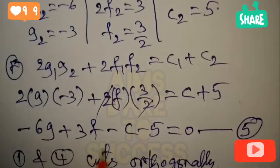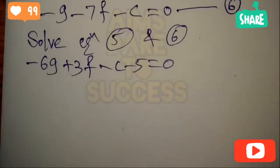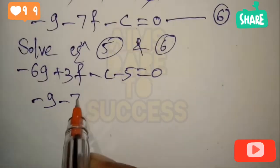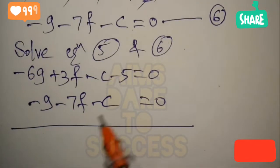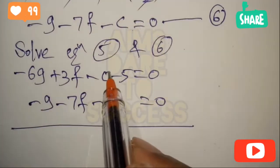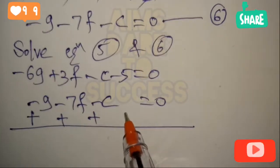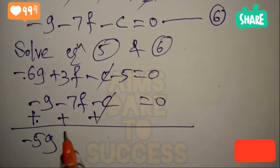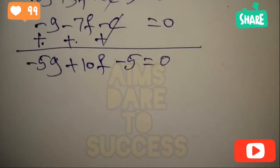Now simplifying equations 5 and 6. Equation 5: -6g + 3f - c - 5 = 0. Equation 6: -g - 7f - c = 0. Since both have -c, subtracting to eliminate c: (-6g + 3f - 5) - (-g - 7f) = 0, giving -5g + 10f - 5 = 0. Let this be equation 7.